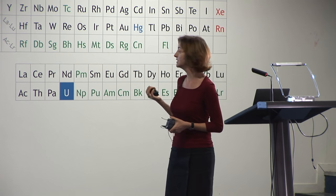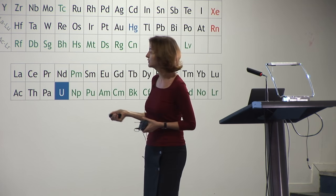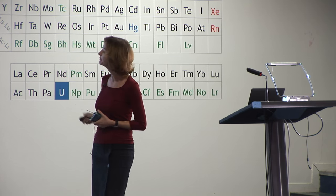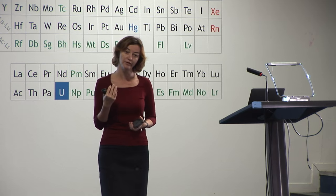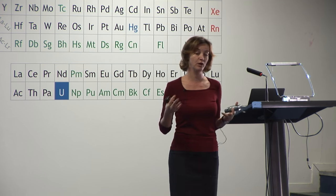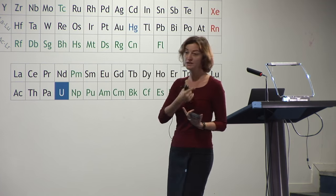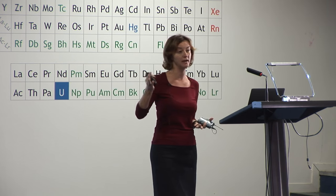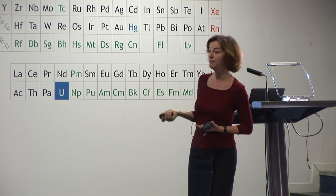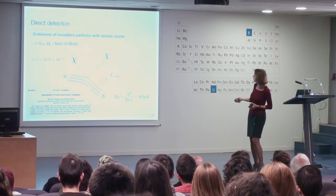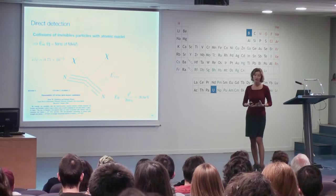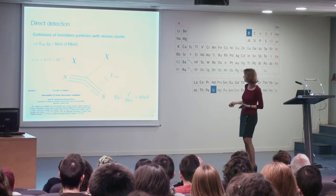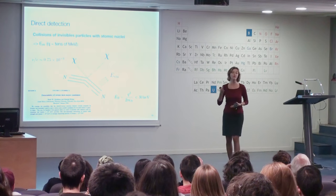This was proposed already in the mid-1980s. Because these particles move very slowly in the Milky Way — with about 220 km/s, which is just our velocity around the galactic center — they have low momenta, maybe tens or a hundred MeV or so. The scattering happens in the deep non-relativistic regime, producing nuclear recoil energies from a few keV — depending on the WIMP mass and velocity distribution — up to maybe 30 or 50 keV. So very low energy transfer.